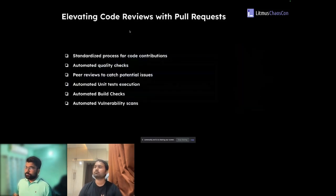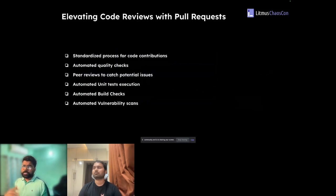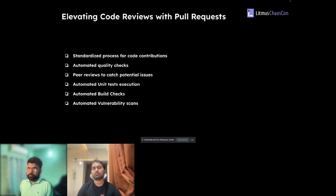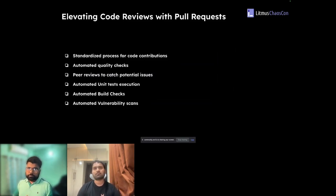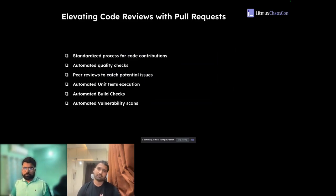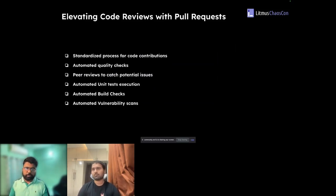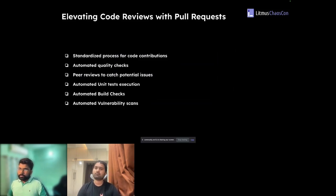Starting with the first point: we need to standardize the process for code contributions. Whether you're starting a new project or already have an open source project with a great community, contributors will want to make enhancements. To enable those contributions, we need to let them know how the code works and what code quality standards and styling we follow — because every developer has a different way of writing code, so we need to standardize the whole code styling process.